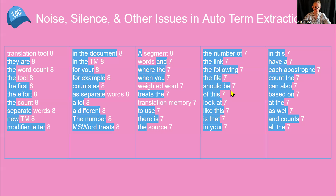Silence, on the other hand, is under-generated results in single words and compound nouns. Silence refers to terms that are actually terms but don't appear in the automatic terminology extraction results list by virtue of not appearing with frequency within a corpus.